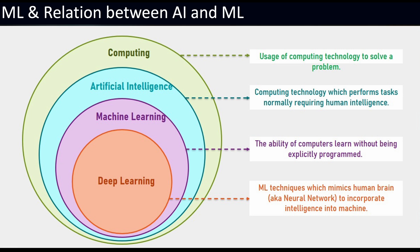Artificial intelligence itself is a branch of computer science. Now let us take one step further and look at deep learning. Deep learning is a specialized subset of machine learning. It uses a technique that mimics how the human brain works in order to embed intelligence into machines. No wonder it is such a hot topic in the industry today.